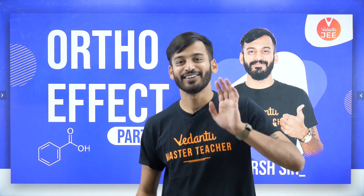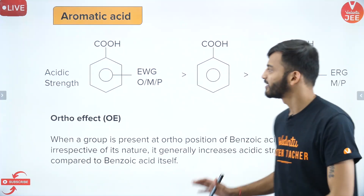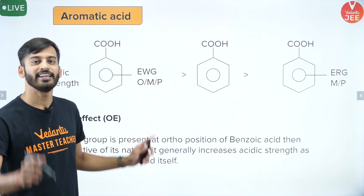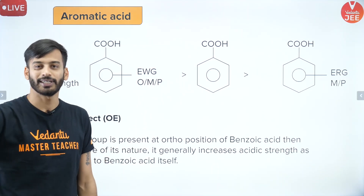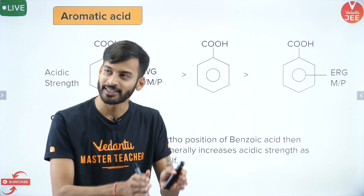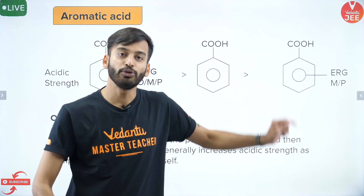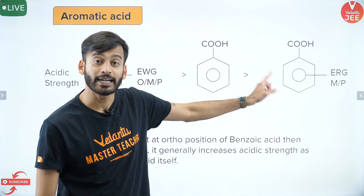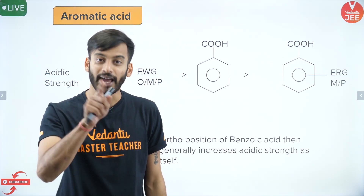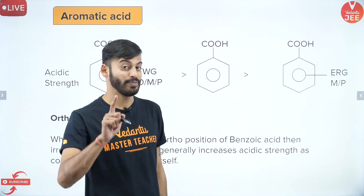Let's start without wasting any time. If I talk about aromatic acids — if you notice benzoic acid — if it is having an electron withdrawing group attached at any position, it will be more acidic as compared to benzoic acid itself. And benzoic acid would be more acidic than those benzoic acids in which an electron releasing group is present. Here I have written meta and para; I have not mentioned ortho.